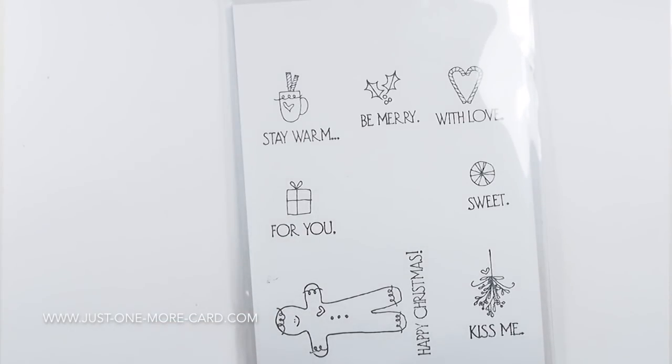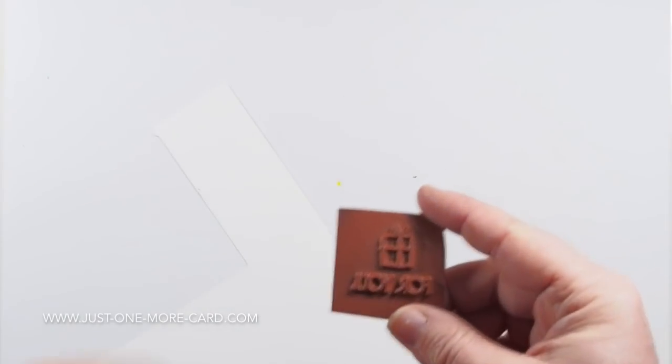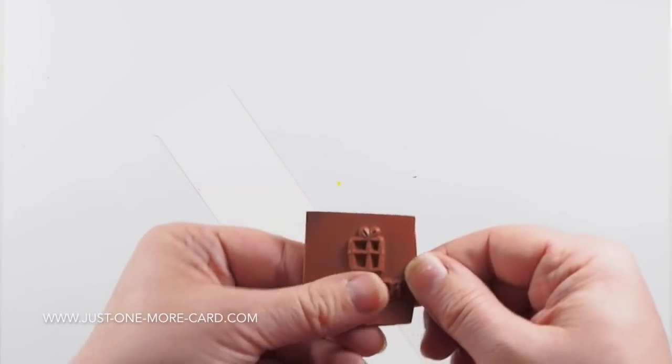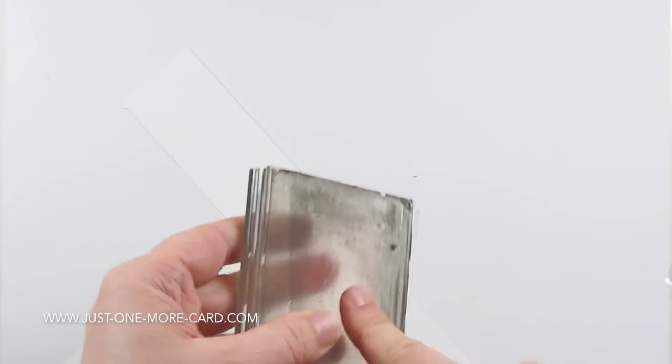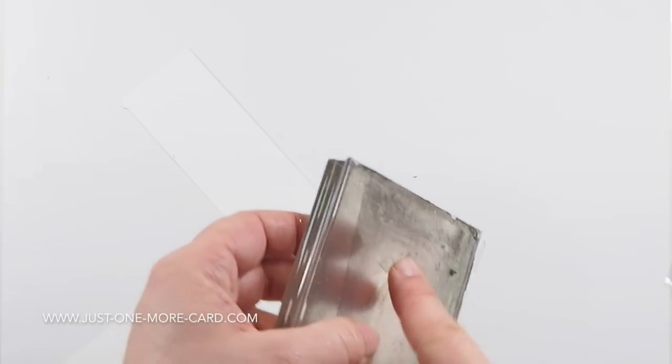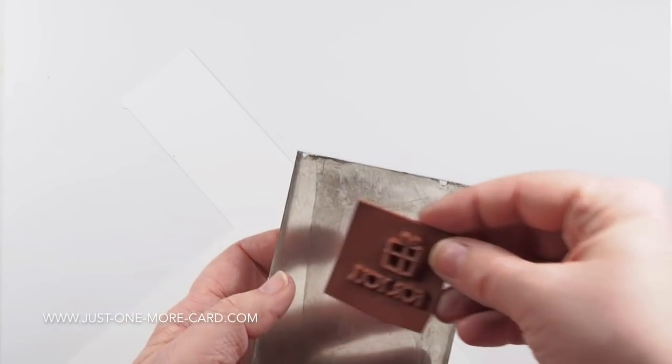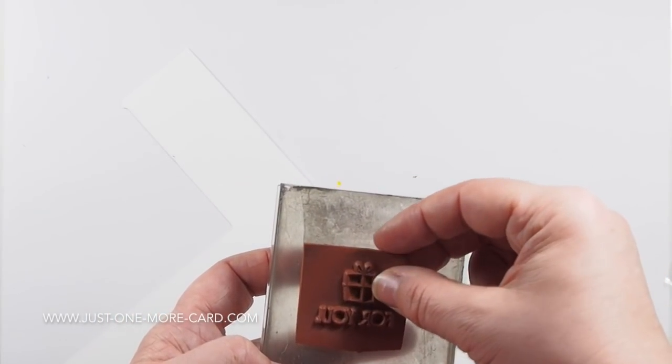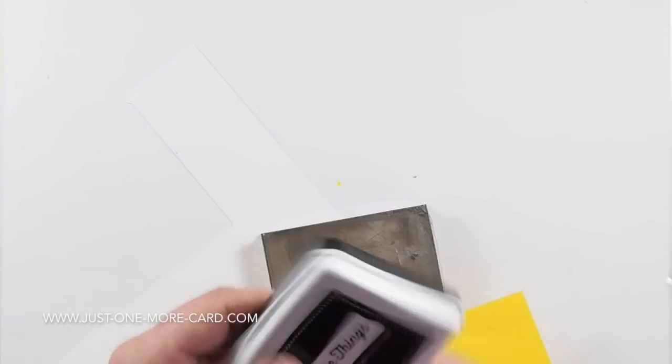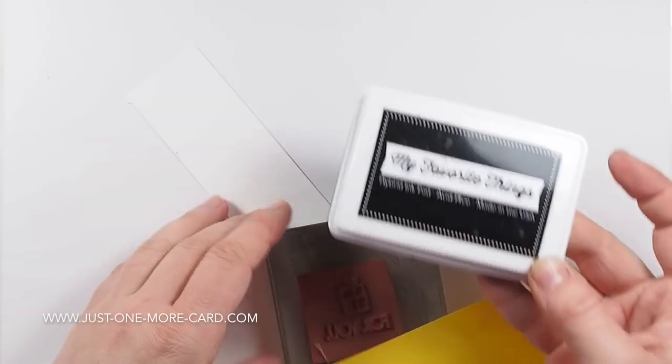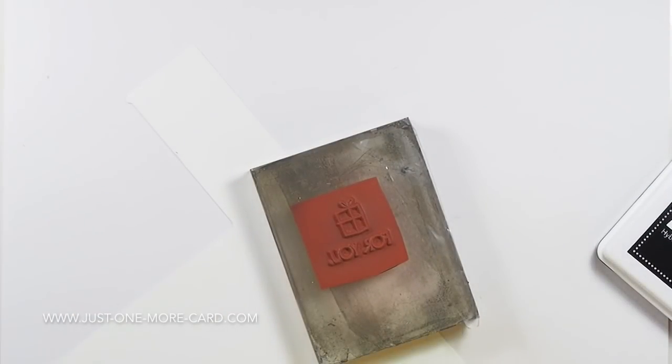I'm going to be using this very simple for you gift stamp and a piece of scratch paper. I'm just going to be using the gift box, not even the sentiment. So what I'm doing here is I have this acrylic block and I taped a piece of Stick and Peel. It's sticky stuff and the rubber stamp sticks to it, so I don't have to mount the rubber stamp at all.